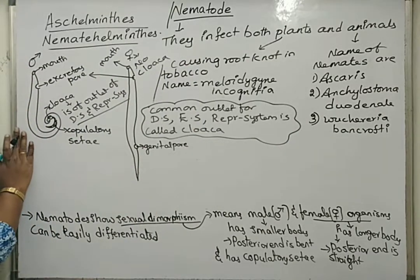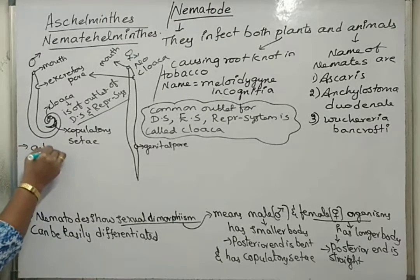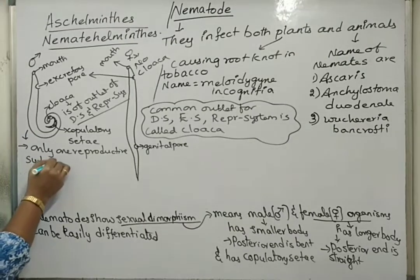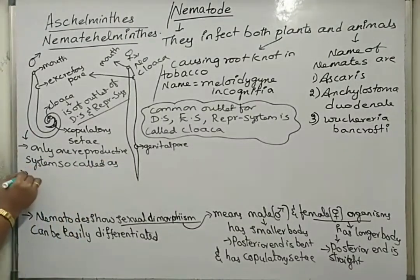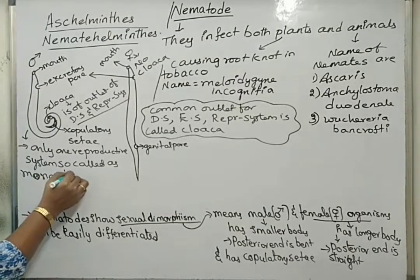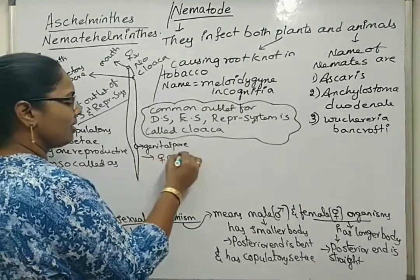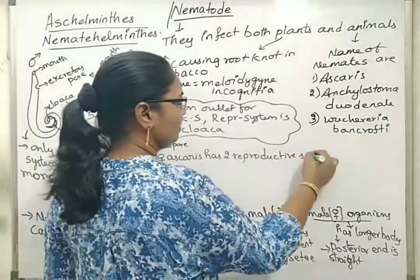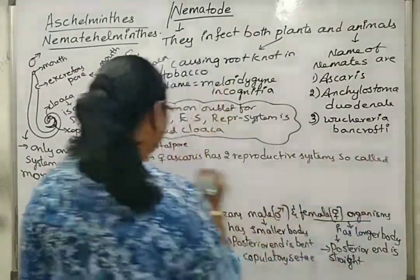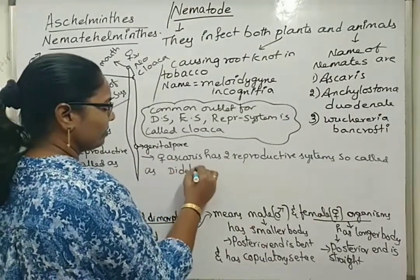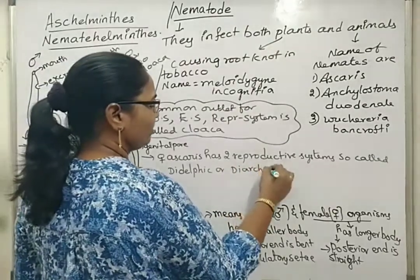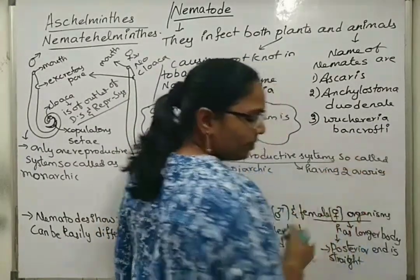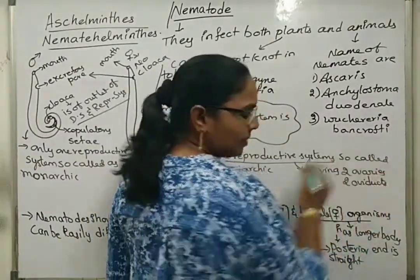Internally, the male nematode has only one reproductive system, so it is called monorchic. The female Ascaris has two reproductive systems, so it is called didelphic or diarchic — having two ovaries, two oviducts, and two uteri.